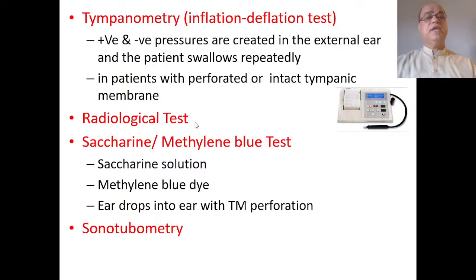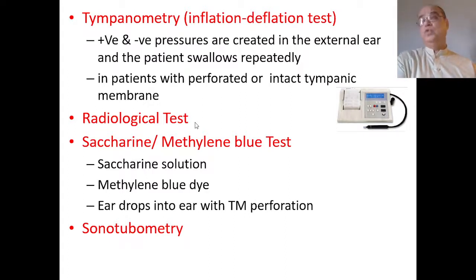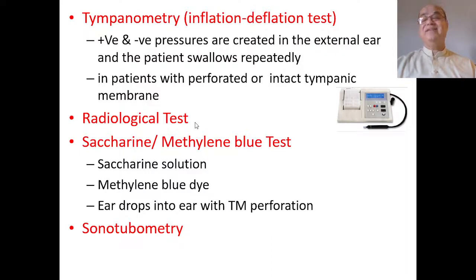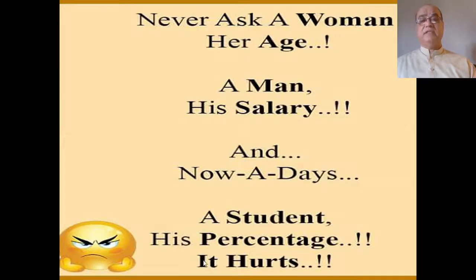The saccharine or methylene blue test can be used when there is a perforation of the tympanic membrane. These are instilled as ear drops through the external ear; they pass through the perforation into the middle ear, and after some time methylene blue can be seen in the nasopharynx, or a sweet saccharine taste is felt by the patient, indirectly confirming Eustachian tube patency. Additionally, sonotubometry measures the air pressure present in the Eustachian tube. These are the different tests available to check Eustachian tube patency.